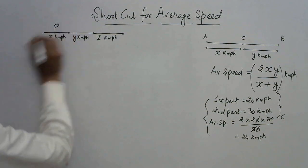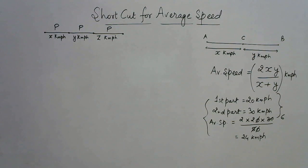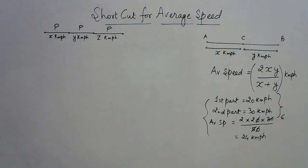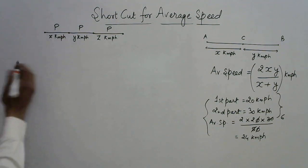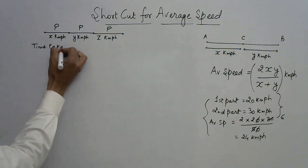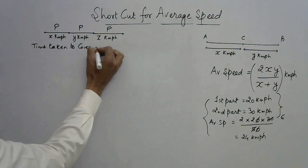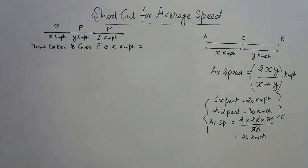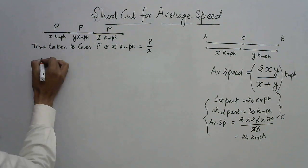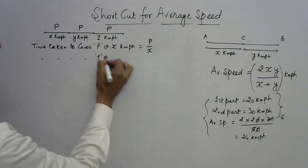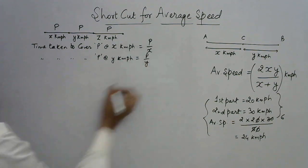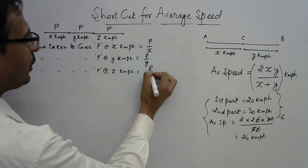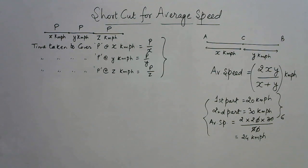Let me consider the three equal distances each as p. I am deriving the shortcut so that understanding it will help you remember it easily. Time taken to cover distance p at x kmph is p upon x. Time taken to cover distance p at y kmph is p upon y. And time taken to cover distance p at z kmph is p upon z. So the three times are found using the formula: time = distance upon speed.